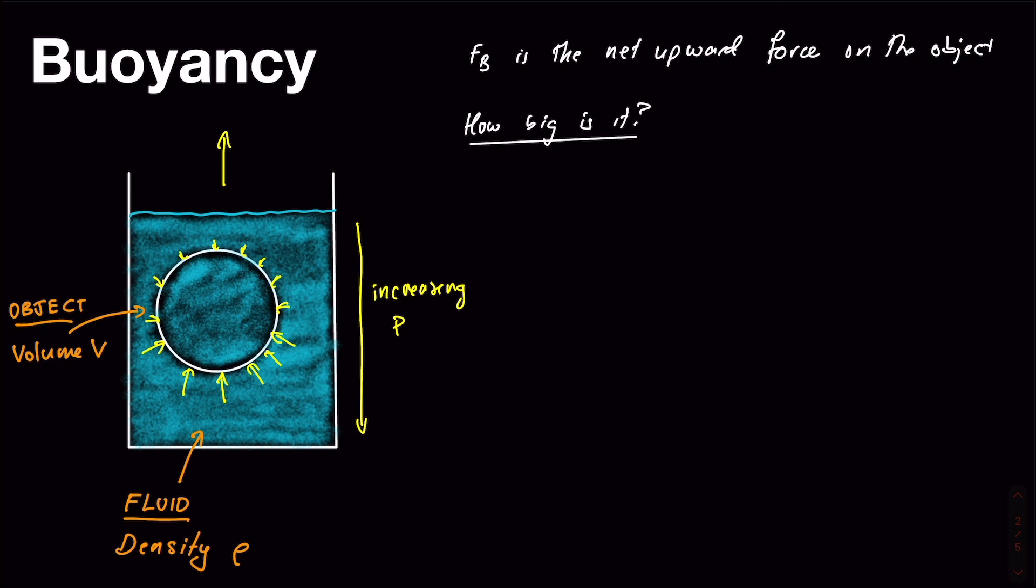So if the object was the same fluid, let's write this down, it would be kind of suspended there, so it wouldn't sink or it wouldn't float. So in terms of the forces on it, what that means is that that buoyancy force upwards must be matching the weight force of the object downwards. So the buoyancy force must just be equal to the weight of that balloon full of the same fluid.